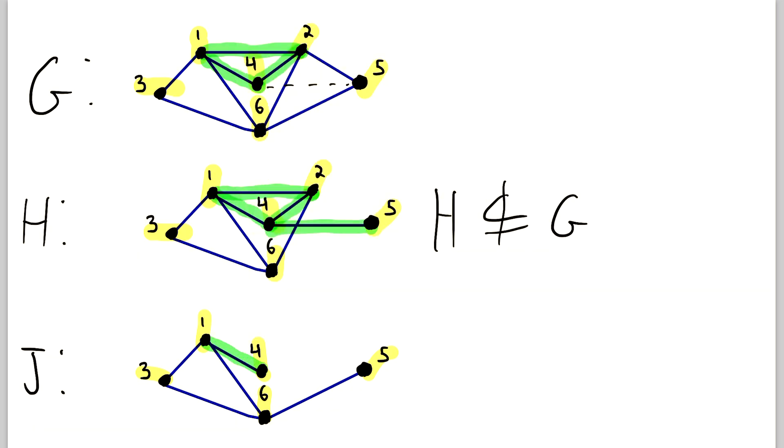1 and 4 are joined in J. We see that those are also joined in G. 1 and 6 are joined in J, as they are also in G. 1 and 3 are joined in J. They're joined in G. 3 and 6 are joined in J. They're also joined in G. 6 and 5 are joined in J. They're also joined in G.